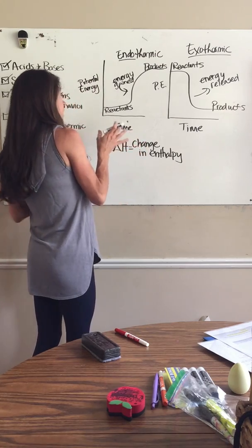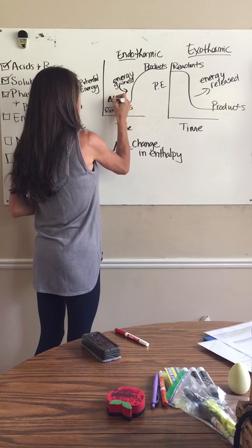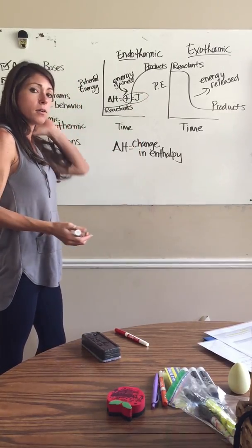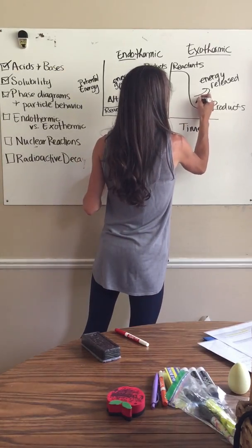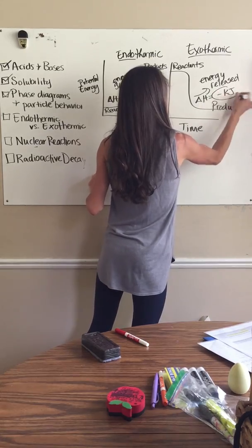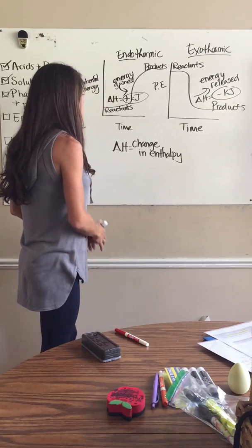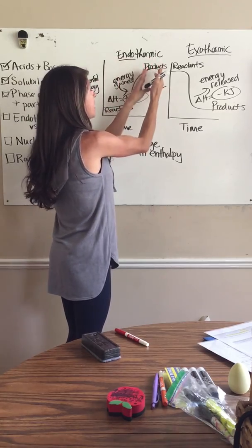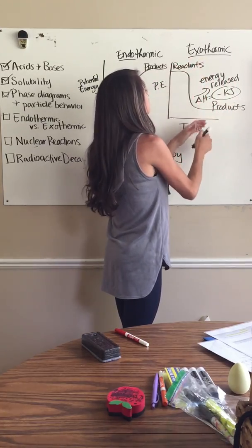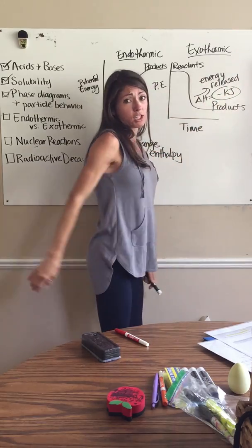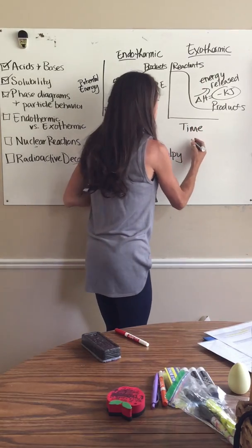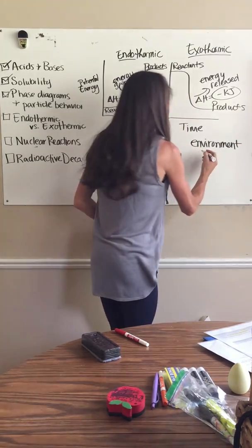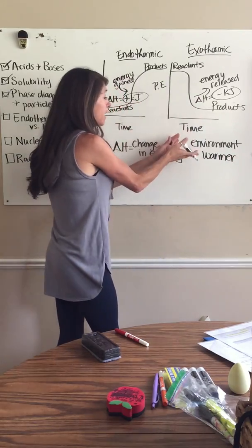In an endothermic reaction, delta H is positive — positive kilojoules — because energy is typically measured in kilojoules in terms of chemical bonds. Delta H is negative when it's an exothermic reaction because energy is released to the surroundings, to the environment. So delta H is positive for endothermic, delta H is negative for exothermic. You need kilojoules of energy brought in to make bonds in endothermic; in exothermic you release kilojoules of energy because you have excess energy once bonds have been broken. In exothermic, the reaction vessel will turn warm — the environment benefits from that energy being released.